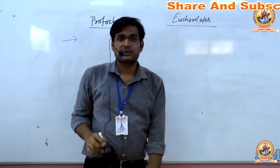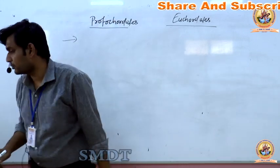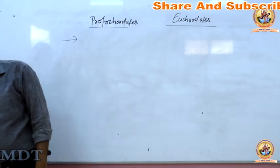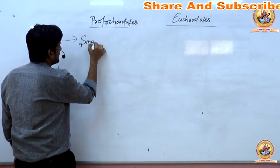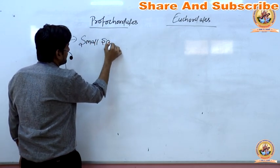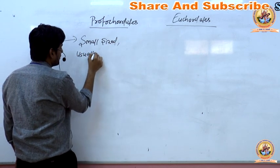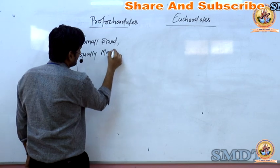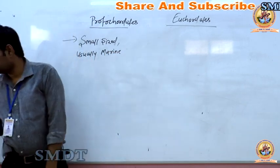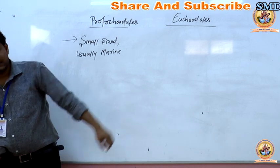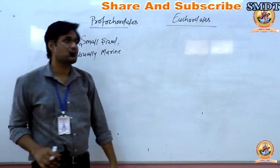What are the differences between Protochordata and Eurochordata (Vertebrata)? Eurochordata are called advanced or higher organisms. First, Protochordata are small sized and usually marine. Eurochordata, on the other hand, are large sized, and can be aquatic as well as terrestrial.